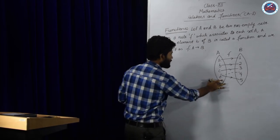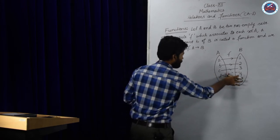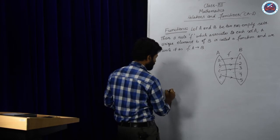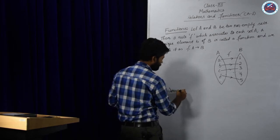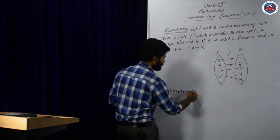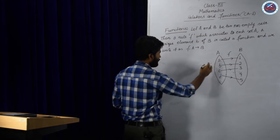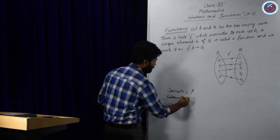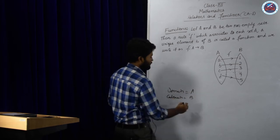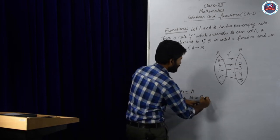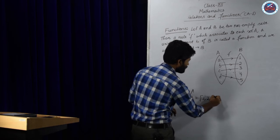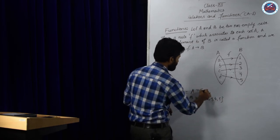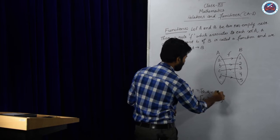Let me remove this. From this example, what is the domain? The domain is the set A and the co-domain is the set B. That means the elements of A are one, two, three, four, five and the elements of B are A, B, C and D.